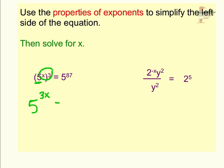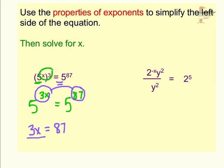To figure out what x is, we notice the base of 5 is the same on both sides, so for these to be equal the exponents have to be the same also. I know that 3x has to equal 87, and so that's what we're going to write: 3x equals 87. Divide both sides by 3, and we're going to get the value of x, which is 29.